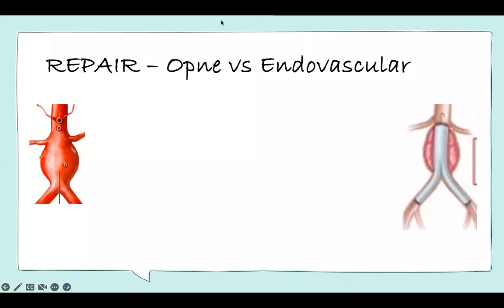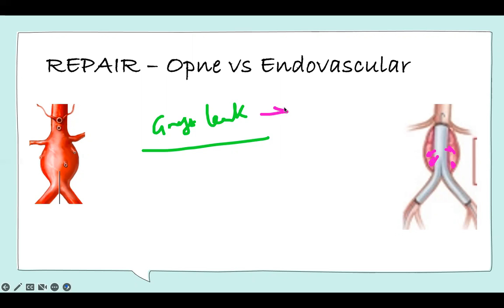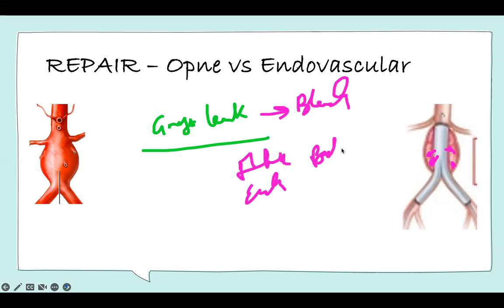Sometimes they use words to confuse you. They may put 'graft leak' — but it's nothing complicated. Graft leak simply means bleeding. If you placed a graft and it's leaking, there's bleeding into the sac. Graft leak equals bleeding. They will have flank pain, ecchymosis, back pain, and will be in shock — all symptoms of shock. Frank pain, leakage, ecchymosis — that's what they're trying to confuse you with. Don't fall for it.